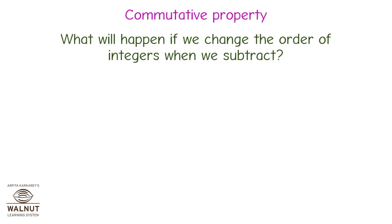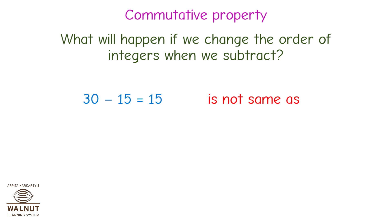Commutative property. Let's check whether the subtraction of integers is commutative or not. What will happen if we change the order of integers when we subtract? Let's see. 30 minus 15 is equal to 15, which is not the same as 15 minus 30, which is equal to minus 15.